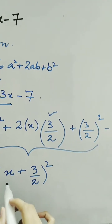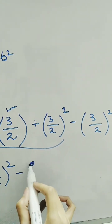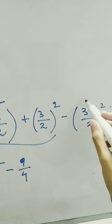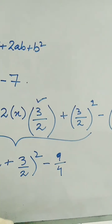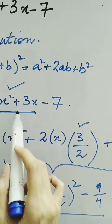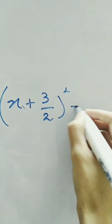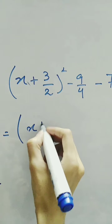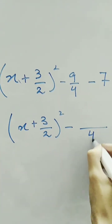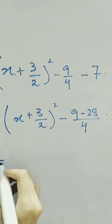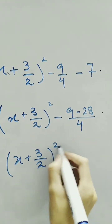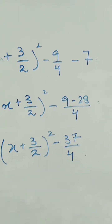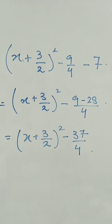These three terms can be written in formula form, and now we have minus 9 over 4, which is the square of this term. We put this expression instead of x squared plus 3x, as they are equal. Now we have x plus 3 over 2 whole square minus 9 over 4 minus 7. Further solving, we have x plus 3 over 2 whole square minus 37 over 4, and this is our complete square form of the given expression.